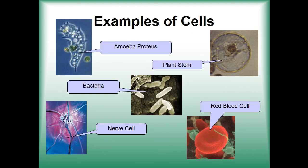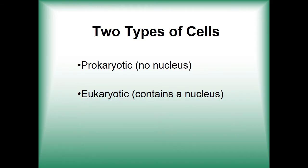These examples come from a wide variety of organisms, with the ability to carry out a varied range of functions, while also having different levels of complexity. We have amoeba proteus, plant stem, bacteria, nerve cell, and the red blood cell. Generally, there are two types of cells.